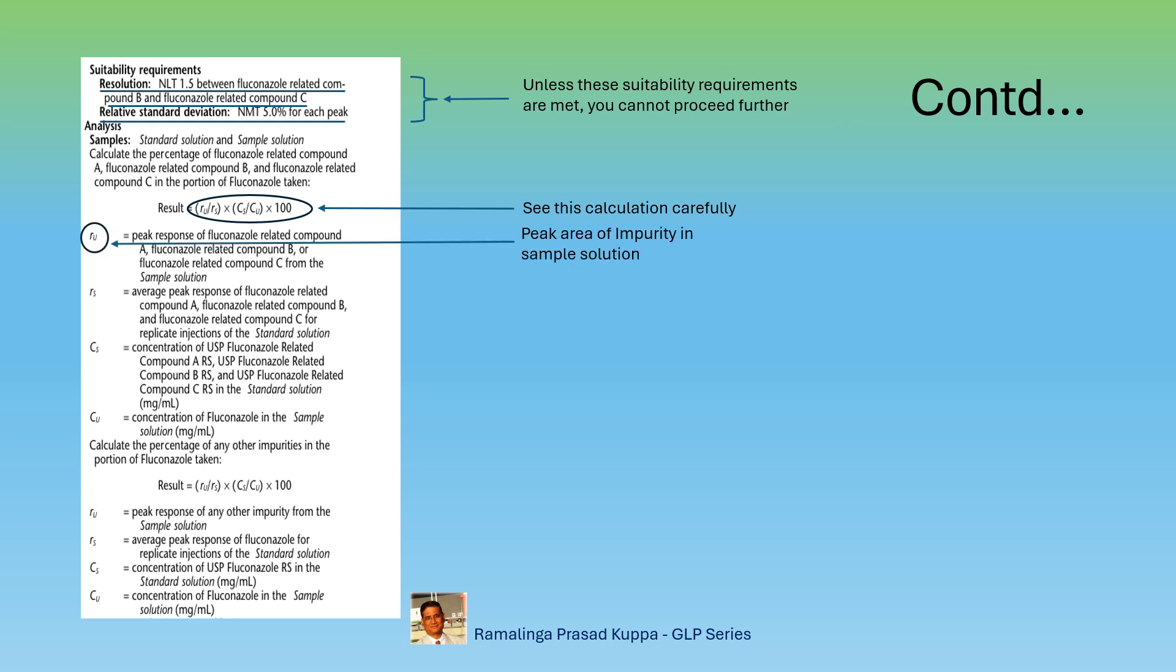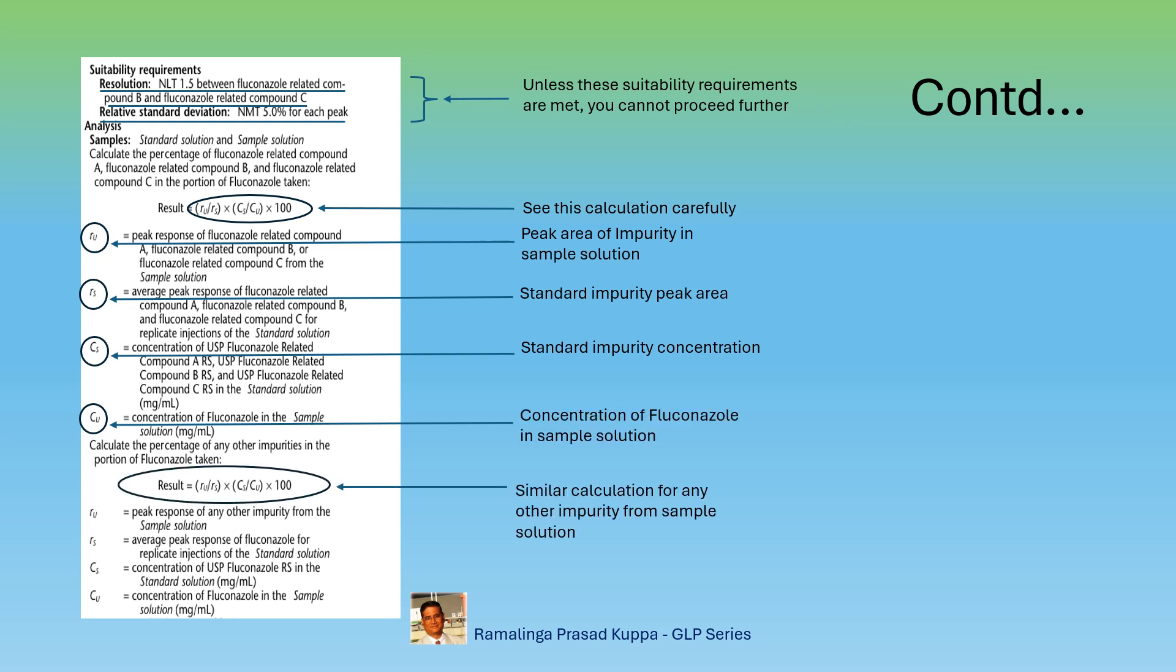This is the sample peak area of impurity in test solution. The area value should be average of replicate injections. This is the average peak area of impurity in the standard solution. This is the concentration of impurity in the standard solution in mg per ml. This is the concentration of fluconazole in the sample solution. Same calculation for any other impurity estimation.